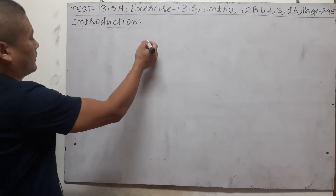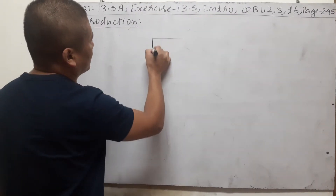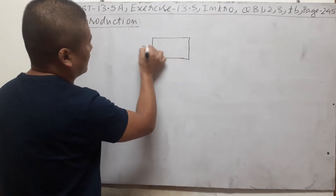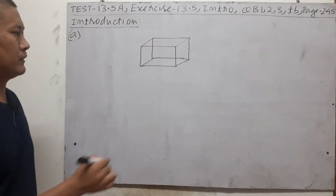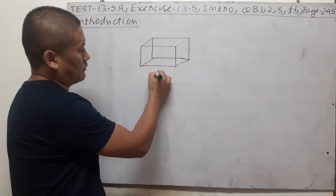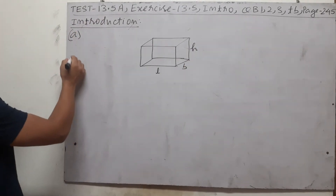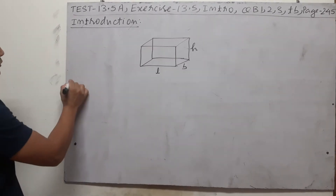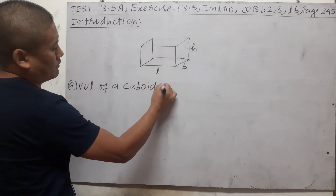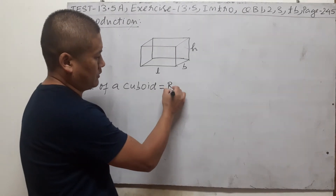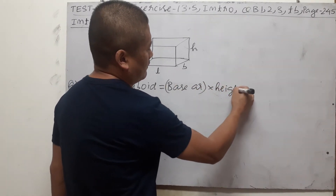Here, let us take the cuboid first. Draw the cuboid along with me. We are already familiar with what a cuboid is — it is a solid having three dimensions: length, breadth or width, and height. In this class we are going to discuss the volume of a cuboid.